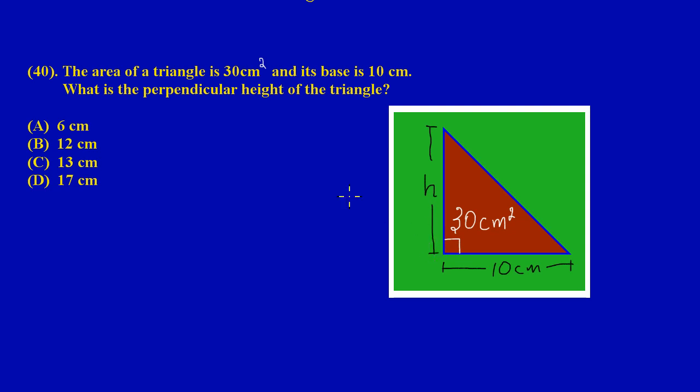Now in calculating the perpendicular height of the triangle, since they gave us the area and they gave us the base, and it's a right angle triangle, we can state that the area of a right angle triangle would be equal to ½ times the base times the height, which is the perpendicular height.